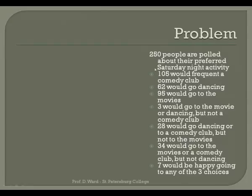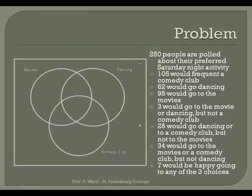We're given a problem: 250 people are polled about their preferred Saturday night activity, and we're given a breakdown. The only options given are comedy club, dancing, or going to the movies. So I'm going to need three overlapping circles in my Venn diagram — movies, dancing, and comedy club. My universe includes all 250 people who are polled.